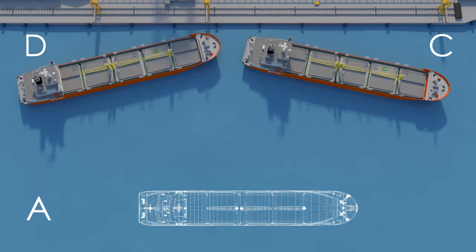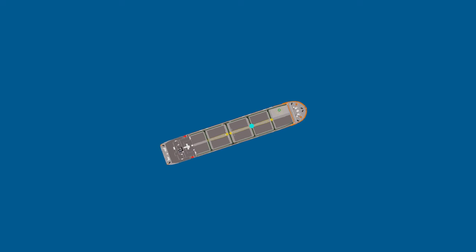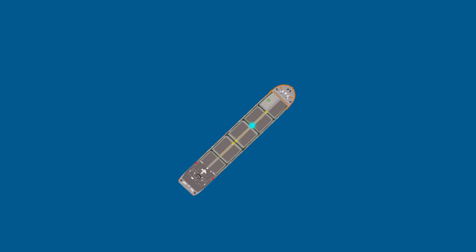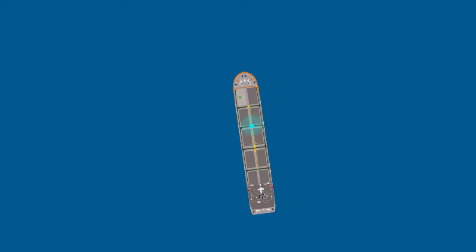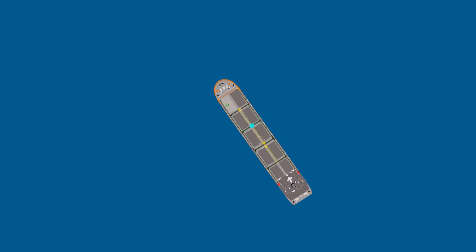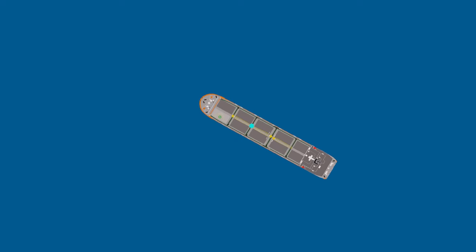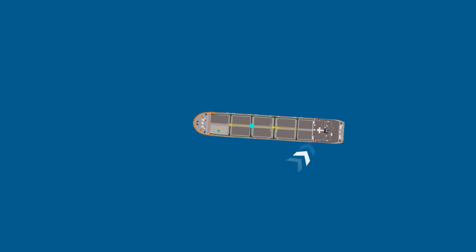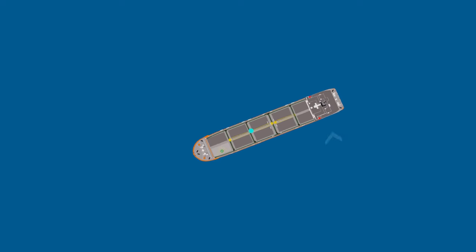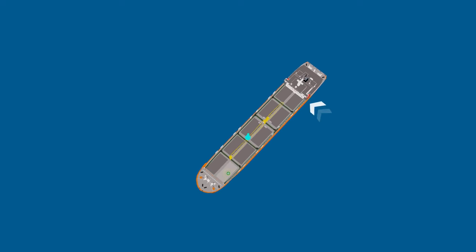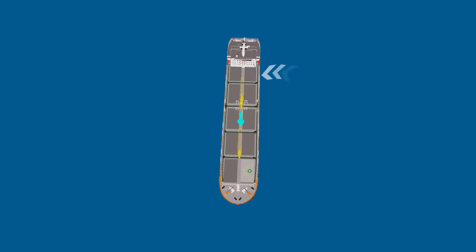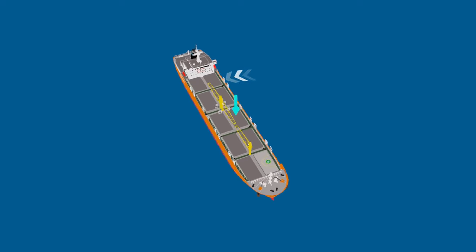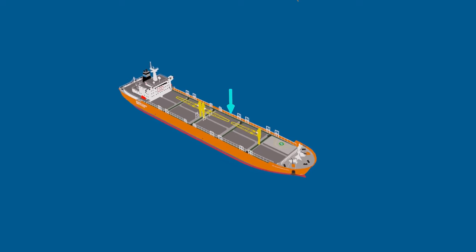Why does this happen? Let's find out. A ship rotates about a point situated along its length, and this point is called the pivot point. When a force is applied to a ship which has the result of causing the ship to turn, the ship will turn around a vertical axis which is conveniently referred to as the pivot point.